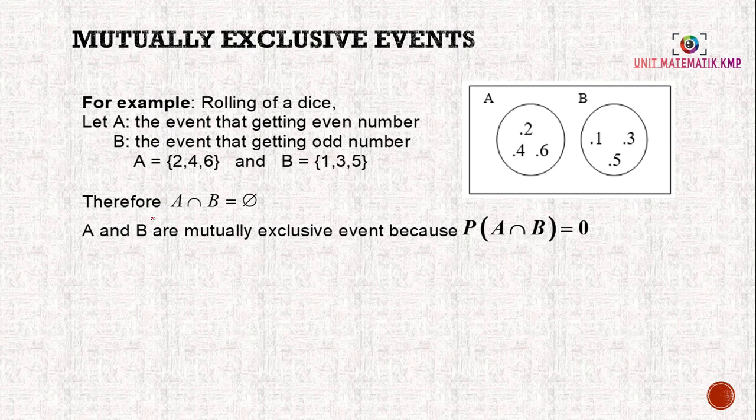Therefore, A ∩ B is equal to the empty set. It cannot happen at the same time. When we roll the dice, we will either get an even number or an odd number only. There's nothing in between. A and B are mutually exclusive events because probability of A ∩ B equals 0.